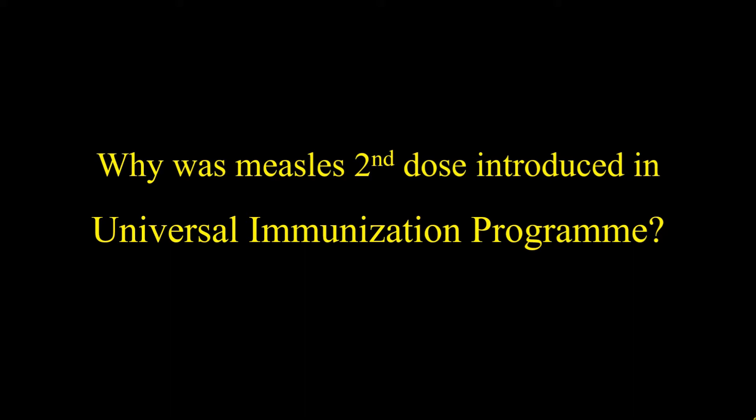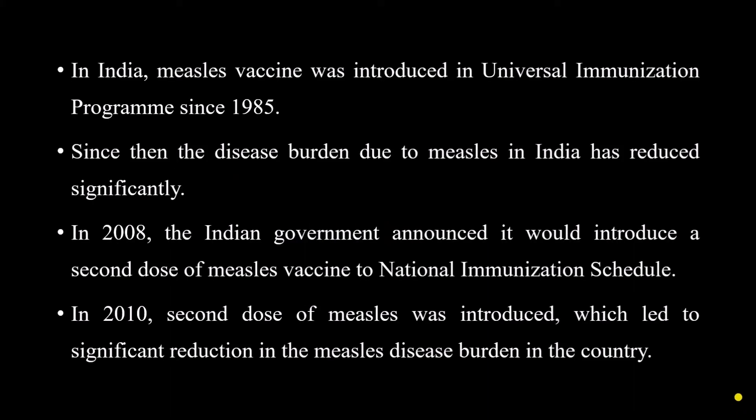In today's video we shall learn why the second dose of measles was introduced in the Universal Immunization Program. In the year 1985, the measles vaccine was first introduced in the Universal Immunization Program in our country, and since that introduction there had been a significant decrease in the number of measles cases. In the year 2008, the Government of India decided and announced that they would introduce the second dose of measles vaccine in the national immunization schedule, and it was implemented in the year 2010. Following that, there was also a significant reduction in the measles disease burden in India.